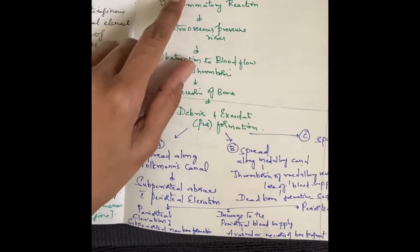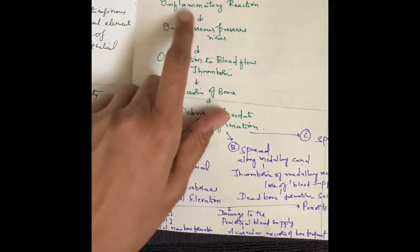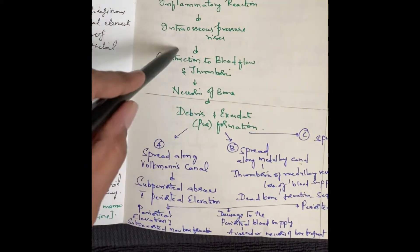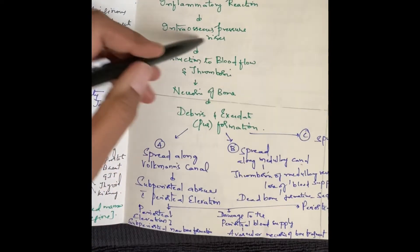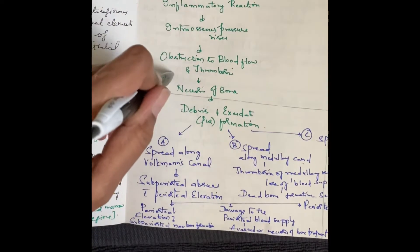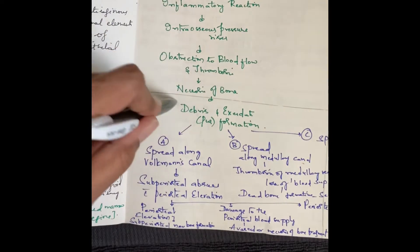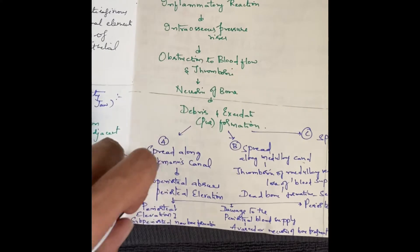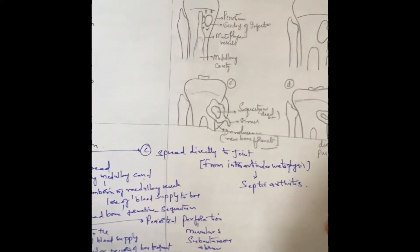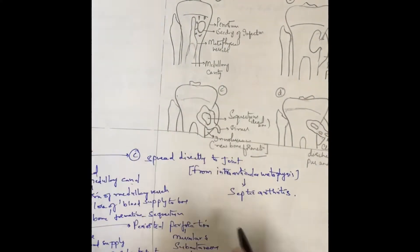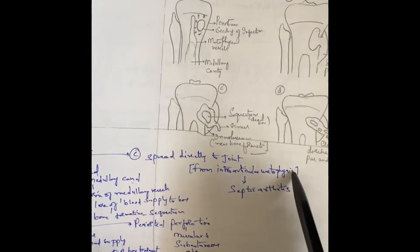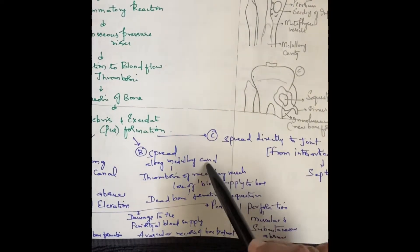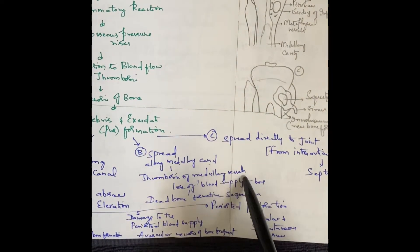First there will be metaphyseal infection. This metaphyseal infection leads to inflammatory reaction, causing increase in intraosseous pressure. If this leads to obstruction of blood flow, thrombosis with necrosis of the bone, debris and exudate formation. This infection may spread along the Volkmann's canal, along the medullary canal, or it may go into the joint. If that infection spreads to the joint from the intra-articular metaphysis, it leads to septic arthritis. Once it goes along the medullary canal, there will be thrombosis of the medullary vessels.